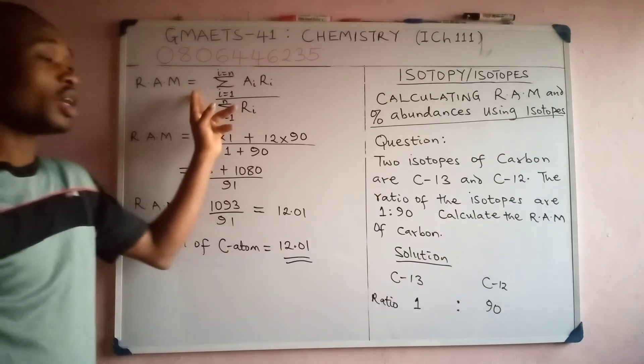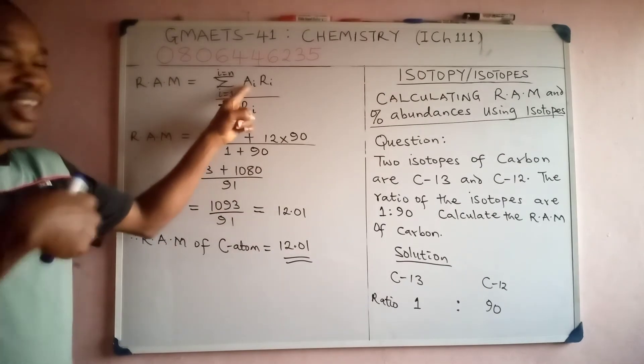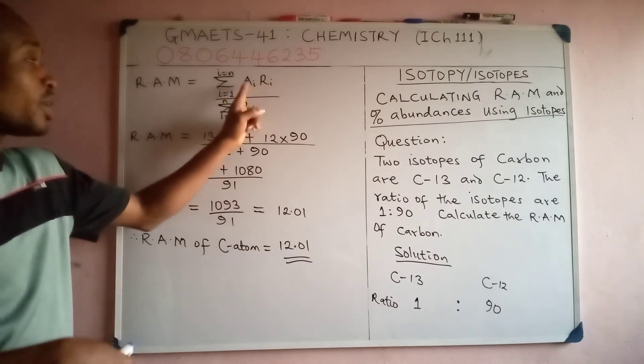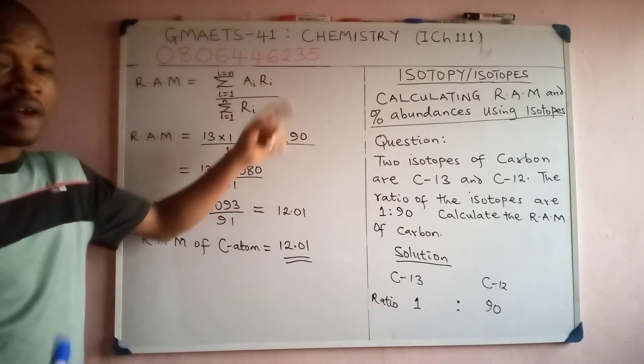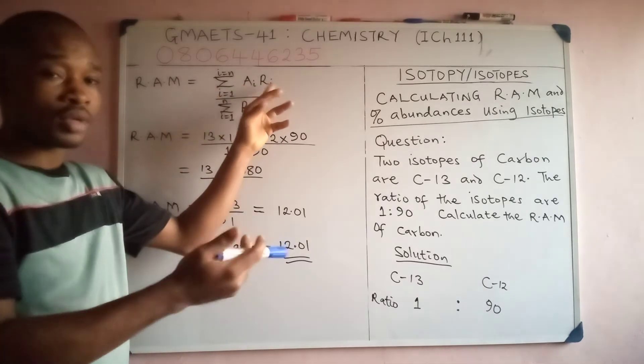What's the formula? Summation, that is add together all AI times RI, where AI of course is mass number and RI represents the ratio. So we're going to do mass number times ratio plus another mass number times ratio.